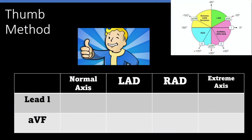All right guys, this is my favorite way of understanding axis. It's a super easy way, and it's called the thumb method. We are only going to care about leads one and AVF. As discussed before, we will be broadly looking at normal, left axis deviation, right axis deviation, and extreme axis deviation. Your left thumb will be for lead one and your right thumb will be for AVF.